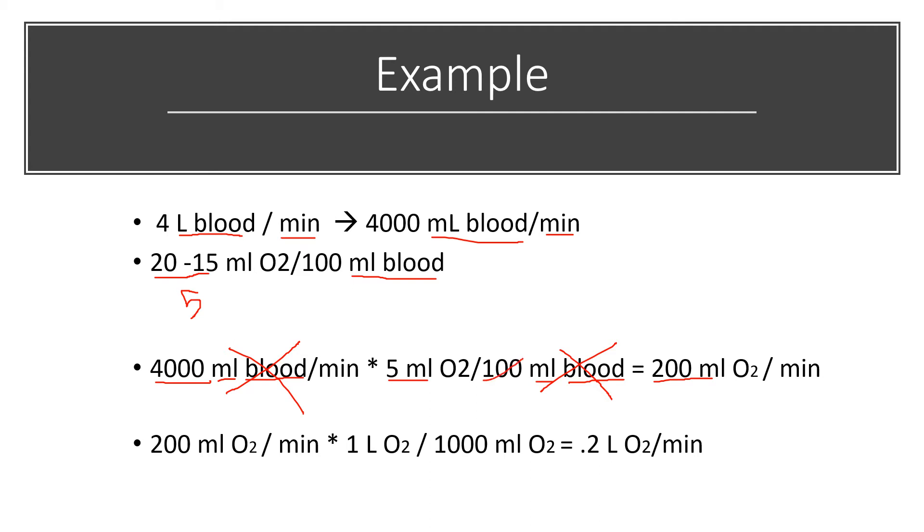You could also just divide by 100 here and knock off these two zeros. You would get 40 times 5, which would give you 200 milliliters of O2 per minute.